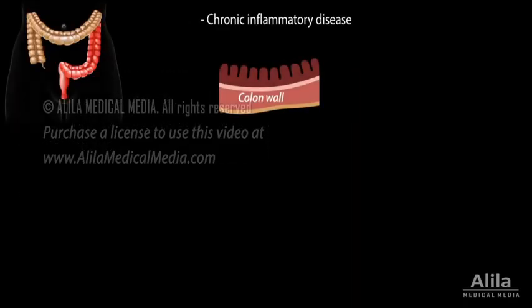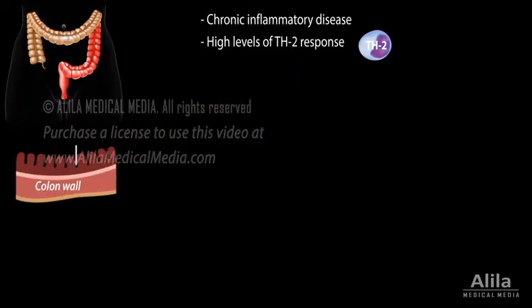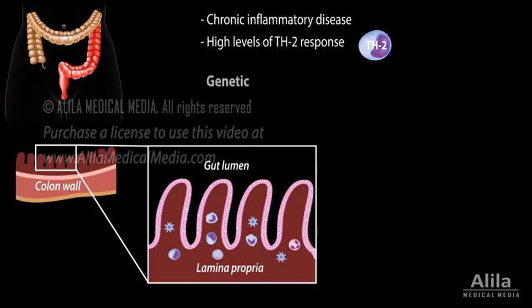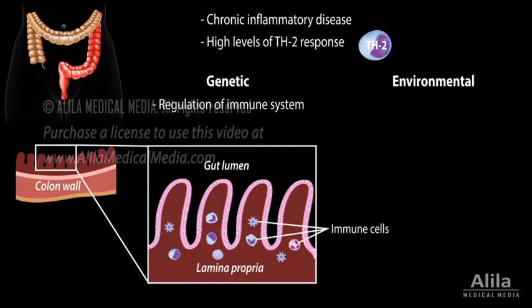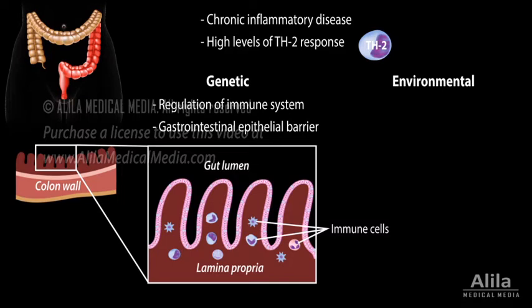Ulcerative colitis is a chronic inflammatory disease where the ongoing immune response destroys the body's own tissues. It is associated with abnormally high levels of T helper cell response, specifically helper T cell type 2, Th2. The exact mechanism is not fully understood, but it likely involves both genetic and environmental factors. Multiple genes are identified, most of which act in the immune system or in maintaining the gastrointestinal epithelial barrier. A mutation in any of these genes may weaken the body's ability to regulate immune responses, or to differentiate between self and non-self. An appropriate inflammatory response against a pathogen may get out of control and become chronic, or the body may mount an inappropriate response against its own antigens.